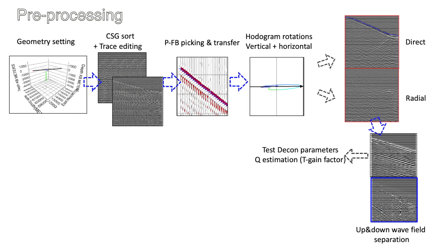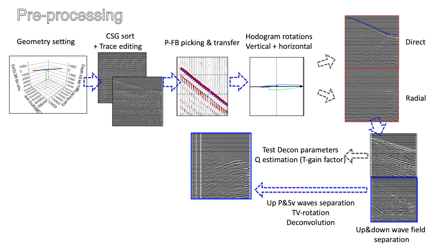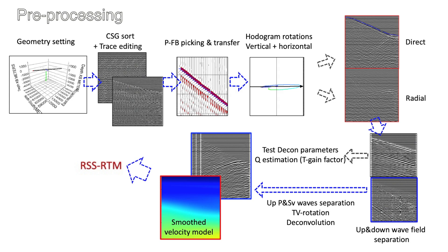The downgoing wave field were then used to test the deconvolution parameters that will be applied to the upgoing wave fields. The near offset downgoing fields were often used to obtain 1D velocity profile and Q-factors. On the other hand, upgoing wave fields were further subjected to time-variant rotation to obtain the finally separated P and S wave fields. Other enhancements including FK filters, bandpass filters can be applied to remove some more noises. With a smooth velocity model, the separated P and S wave fields after deconvolution will be imaged using RSSRTM.